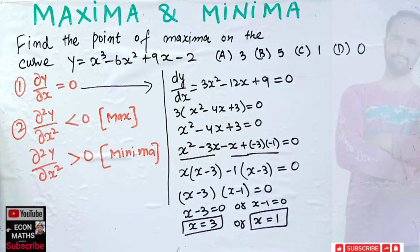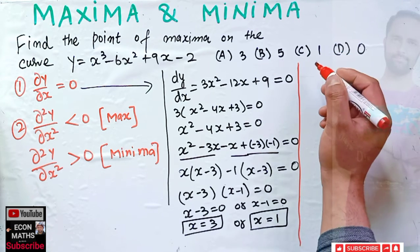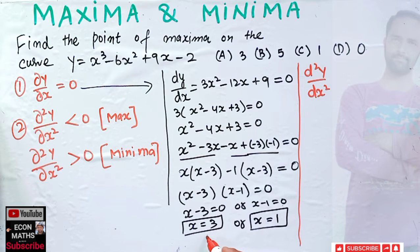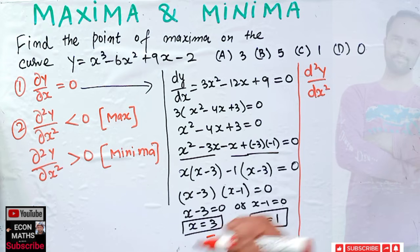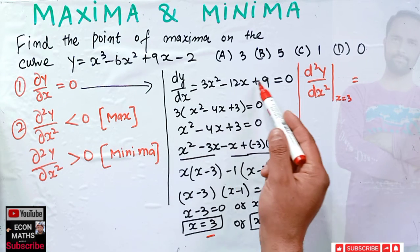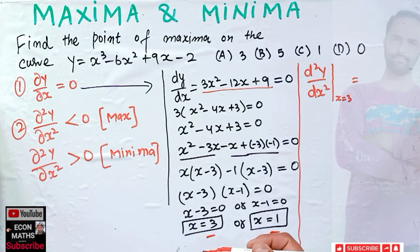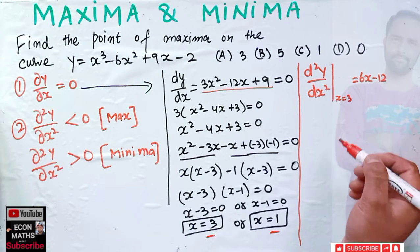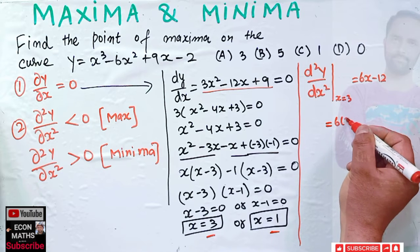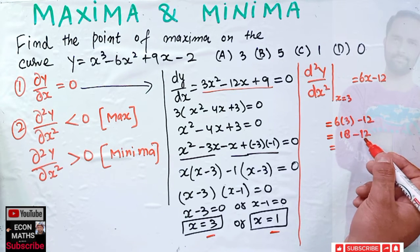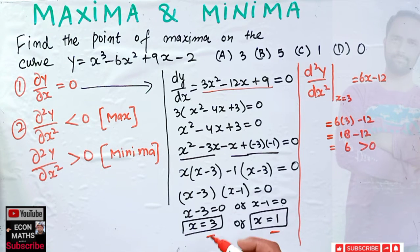For the second order condition, we take d²y/dx², which is the derivative of 3x² - 12x + 9, giving us 6x - 12. Evaluating at x = 3: 6(3) - 12 = 18 - 12 = 6, which is greater than zero. So x = 3 is a point of minima, because when the second derivative is greater than zero we have minima.